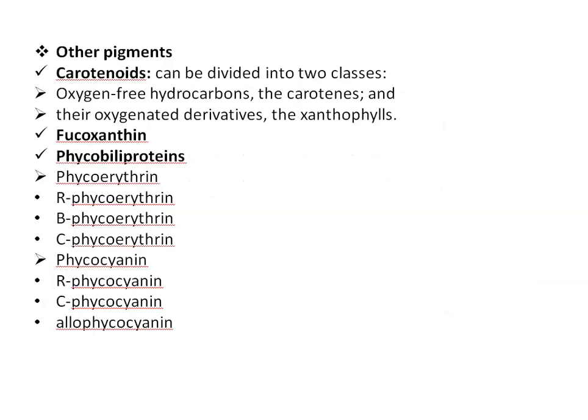Other pigments include carotenoids. Carotenoids are yellow, orange, and red pigments that usually occur inside the plastid but may be outside in certain cases. Naturally occurring carotenoids can be divided into two classes: oxygen-free hydrocarbons, that is carotenes, and oxygenated derivatives, the xanthophylls. There are a large number of different xanthophylls, with the chlorophyta having xanthophylls that most closely resemble those in higher plants. Fucoxanthin is the principal xanthophyll in the golden-brown algae, that is bacillariophyceae and phaeophyceae, giving these algae their characteristic color.